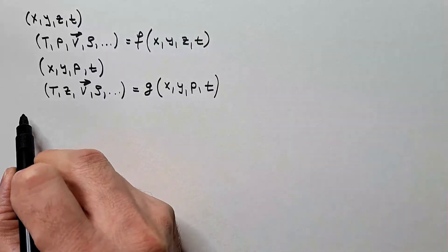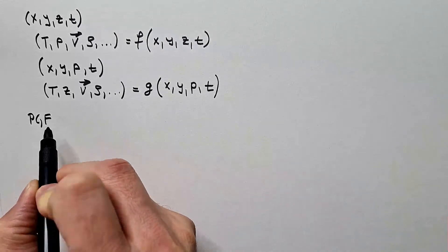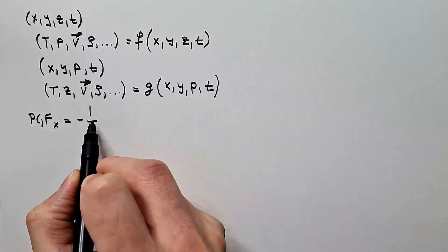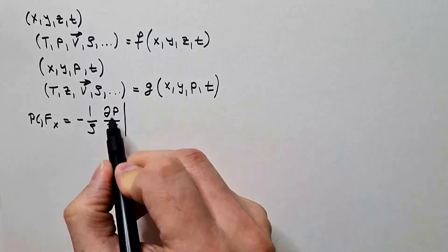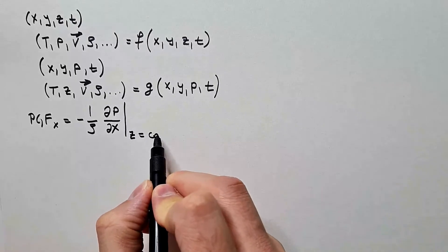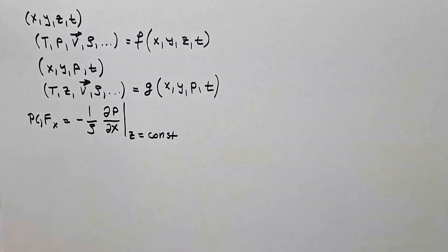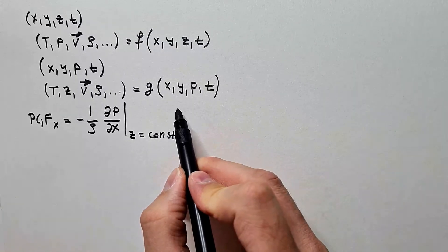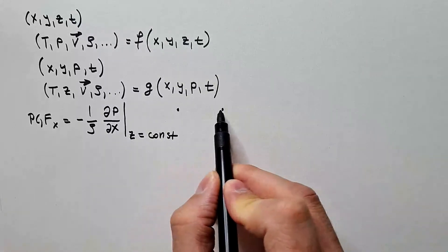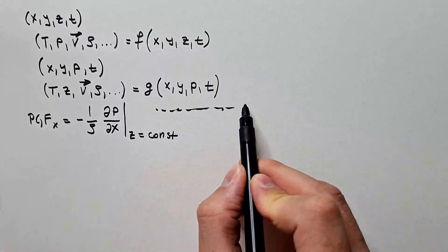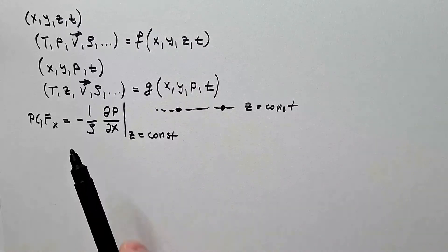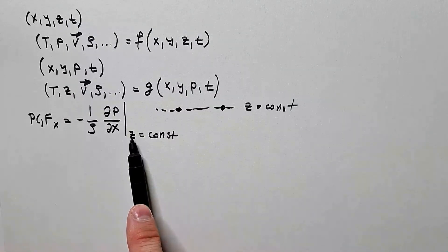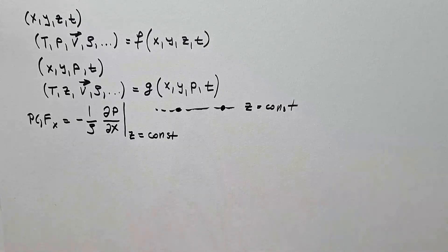We know that the pressure gradient force in the x direction is minus 1 over rho times delta p over delta x. But this gradient is evaluated at z equal constant. Now we need to evaluate this horizontal partial derivative holding p constant instead of holding z constant, because p is the independent variable. Let's make a drawing of this situation.